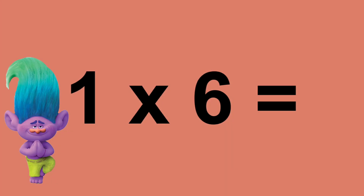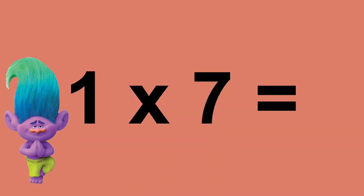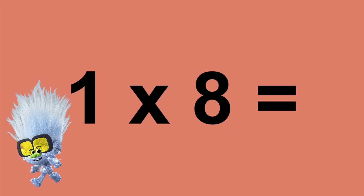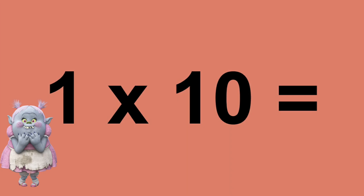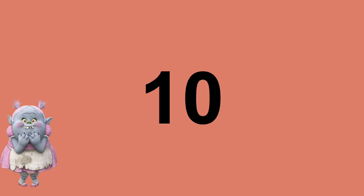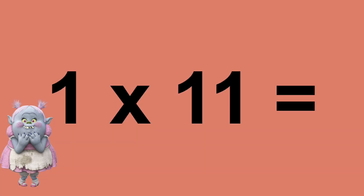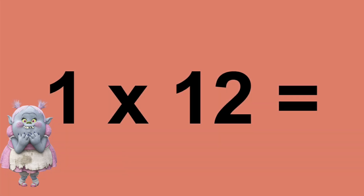One times six equals six. One times seven equals seven. One times eight equals eight. One times nine equals nine. One times ten equals ten. One times eleven equals eleven. One times twelve equals twelve.